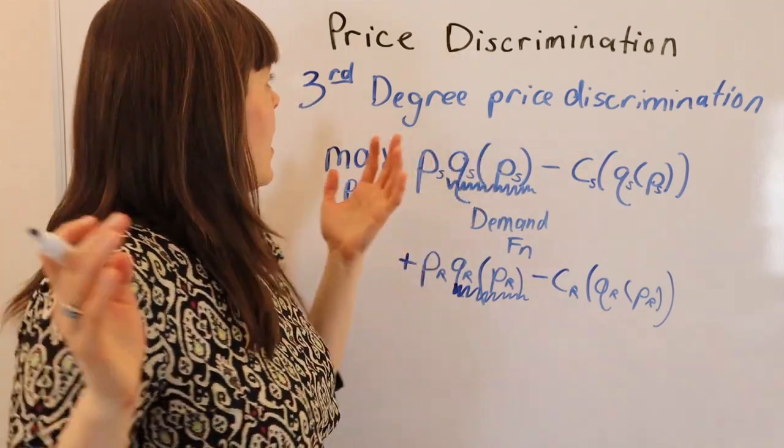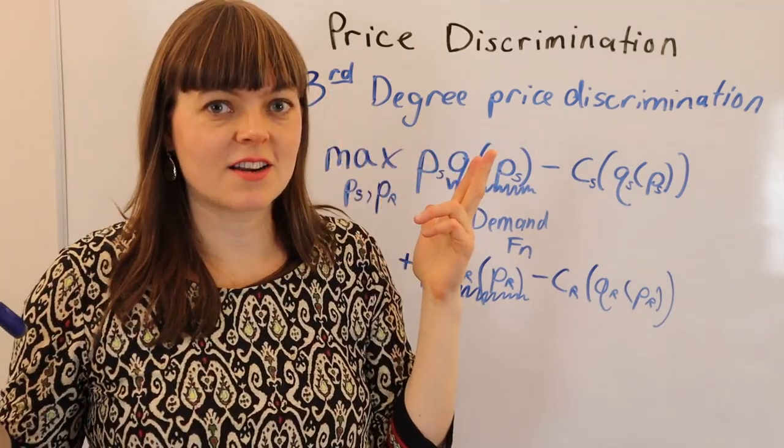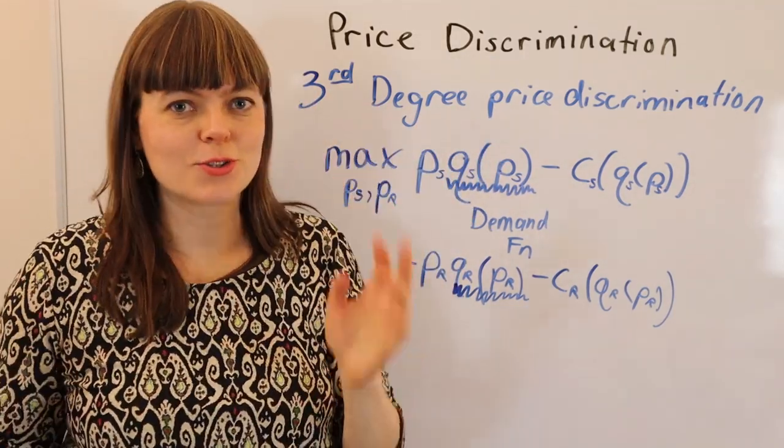That's all it is. Modeling price discrimination at the third degree is super easy.